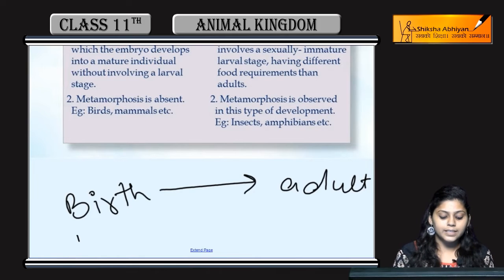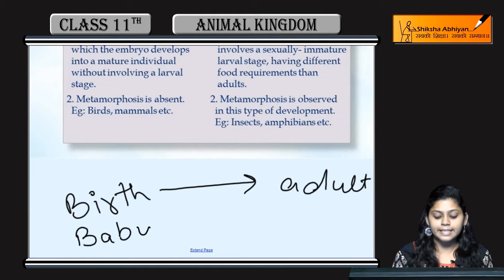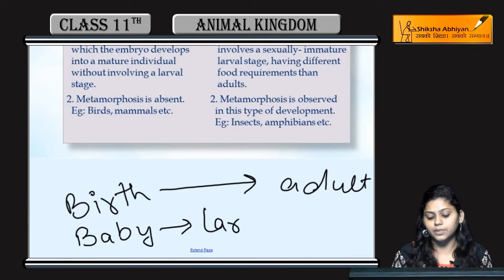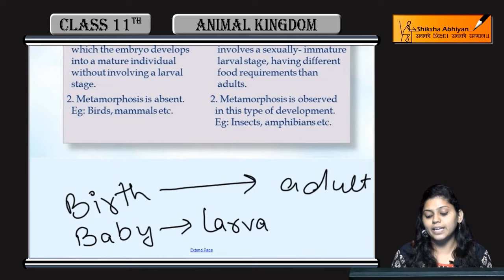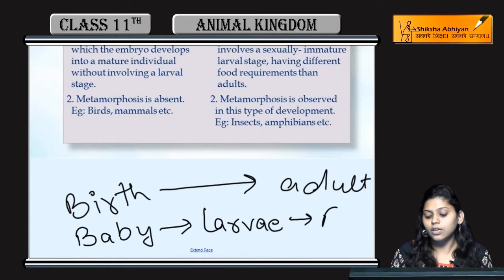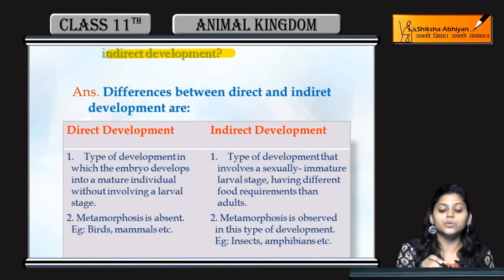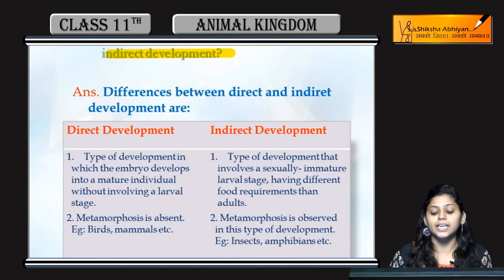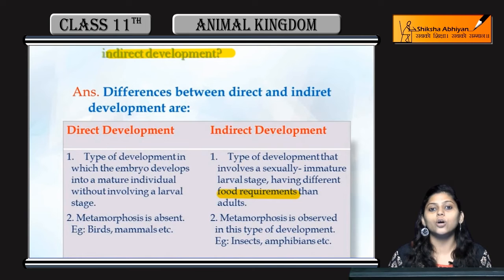In indirect development, after birth, the organism passes through another stage. For example, frogs — when they hatch from eggs, they become larvae, and then they become adult frogs. The larval stage is different from the adult stage because they have different food requirements and many environmental conditions are different.